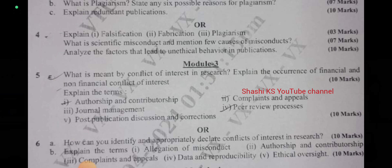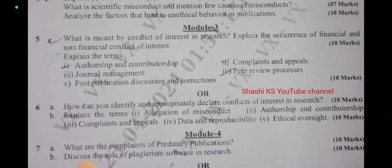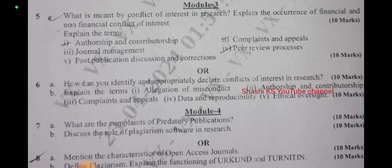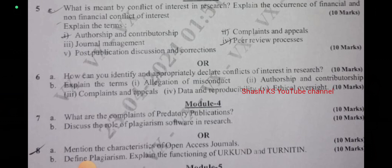In Module 4, question 7a: what are the components of predatory publications — asked for 10 marks. Question 7b: discuss the role of plagiarism software in research — asked for 10 marks. The or-choice: mention the characteristics of open access journals — asked for 10 marks. Question 8a: define plagiarism and explain the functioning of Urkund and Turnitin — asked for 10 marks.